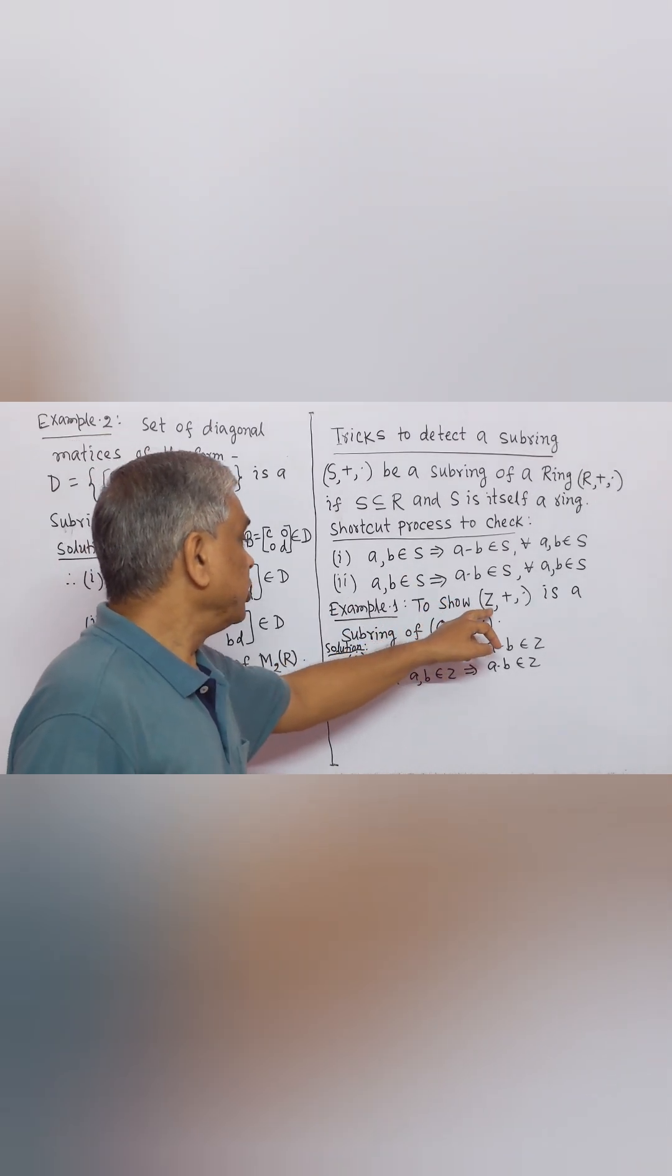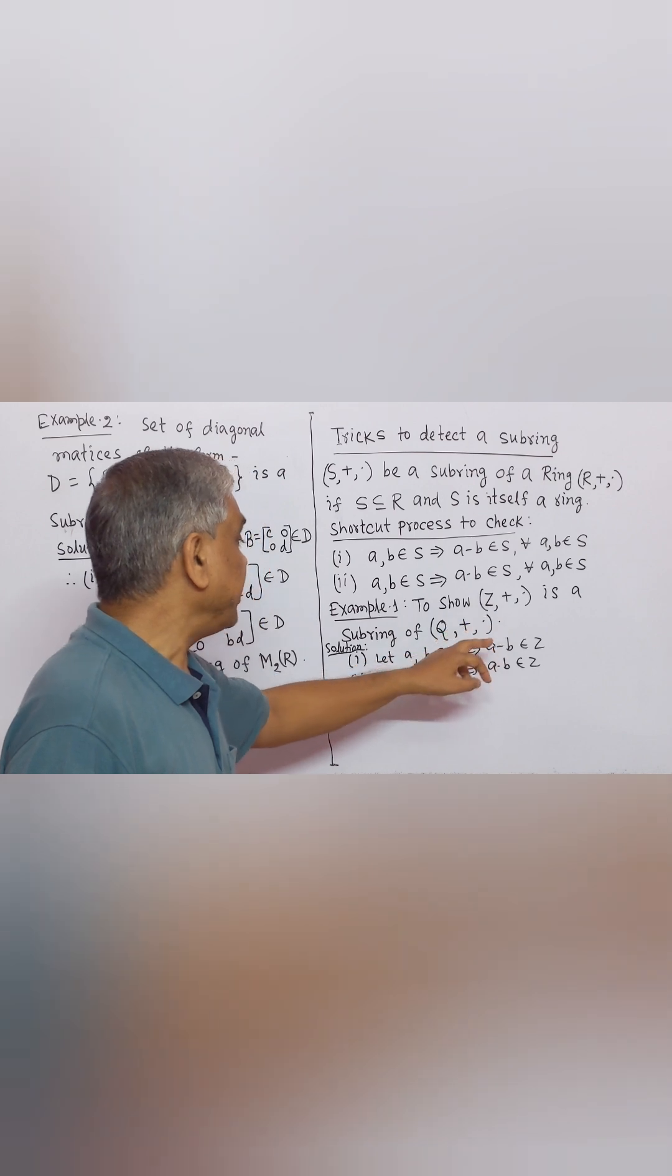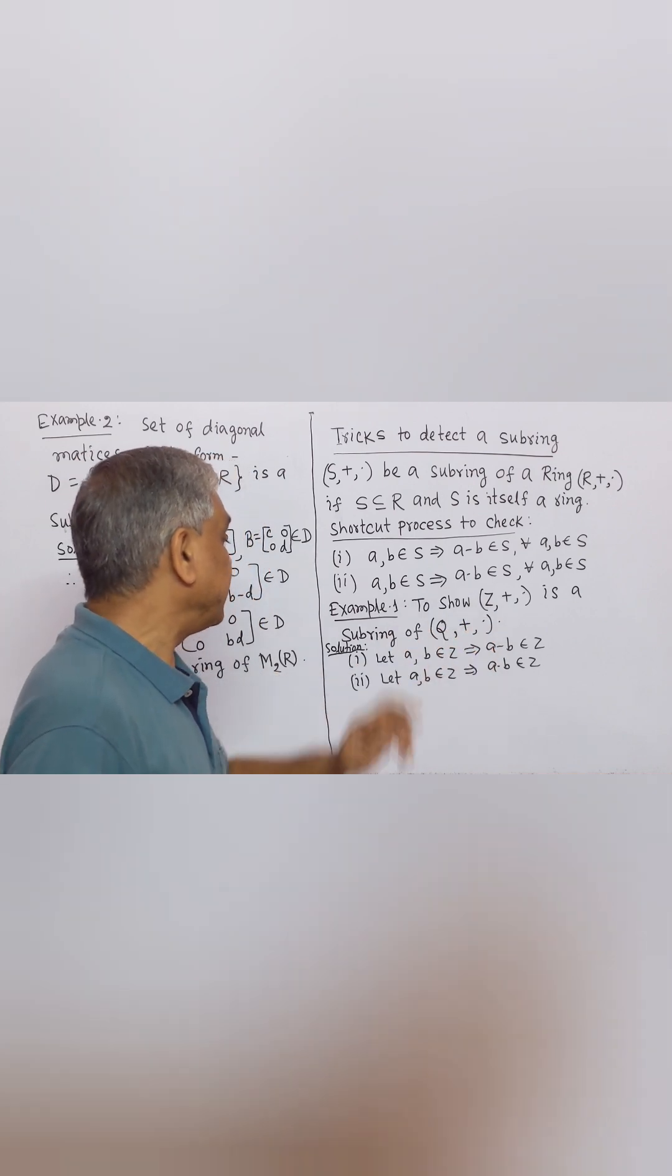Example 1. To show set of integers Z is a subring of Q, set of rational numbers.